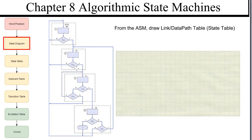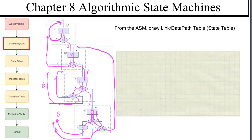So let's draw our link paths. We have one right here — it's 10. Now we're going to draw the state table. So we start off with our link paths: one, two.